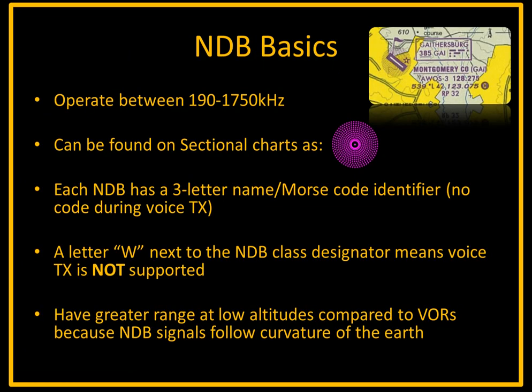One of the first things we'll see is that the NDB operates between 190 and 1750 kHz, and we can find it on the sectional chart as a magenta matted circle. Each NDB is going to have a three-letter name and a Morse code identifier.